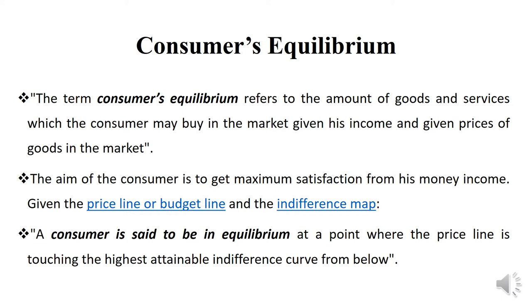The aim of the consumer is to get maximum satisfaction from his money income, given the price line or budget line and indifference map. The consumer is said to be in equilibrium at a point where the price line is touching the highest attainable indifference curve from below.